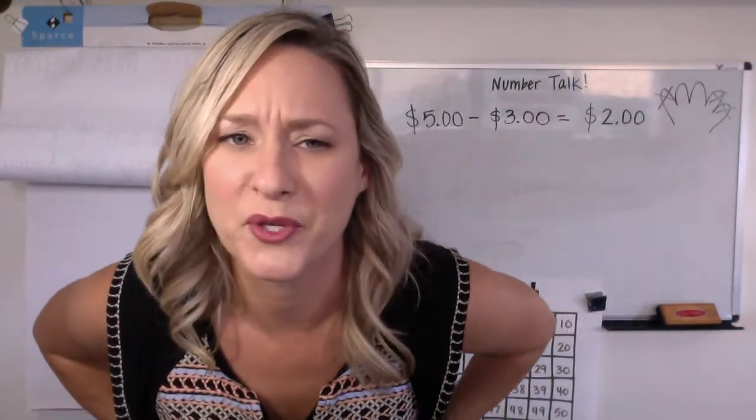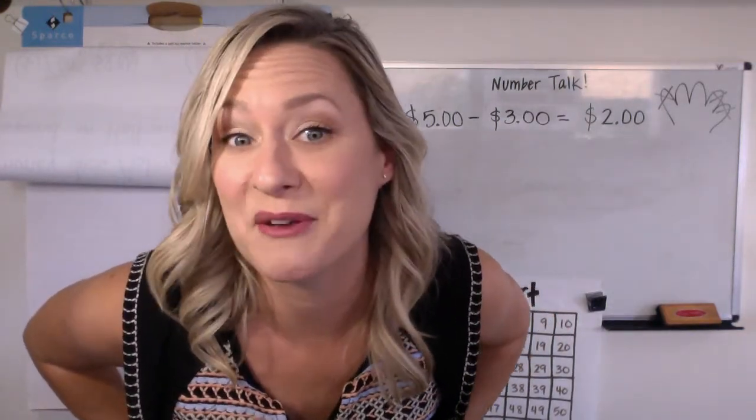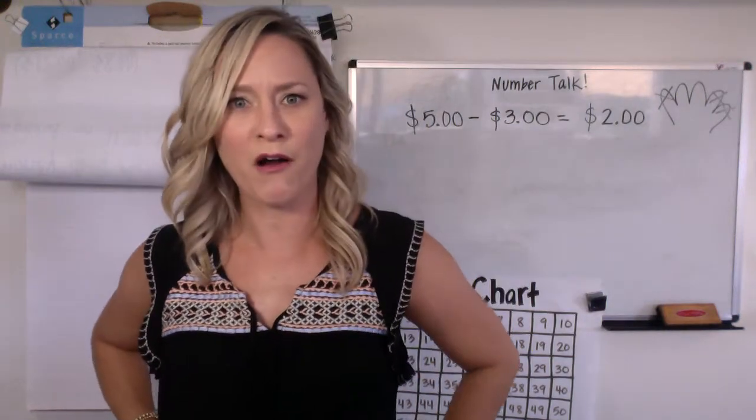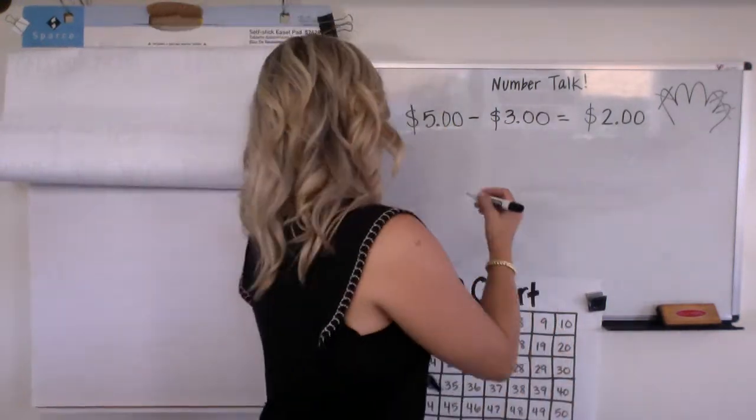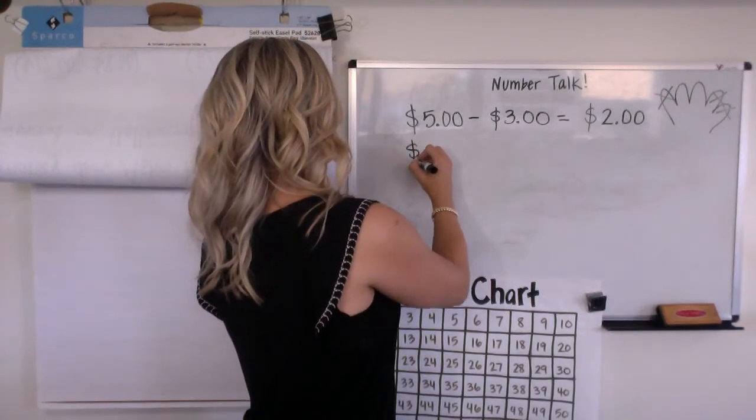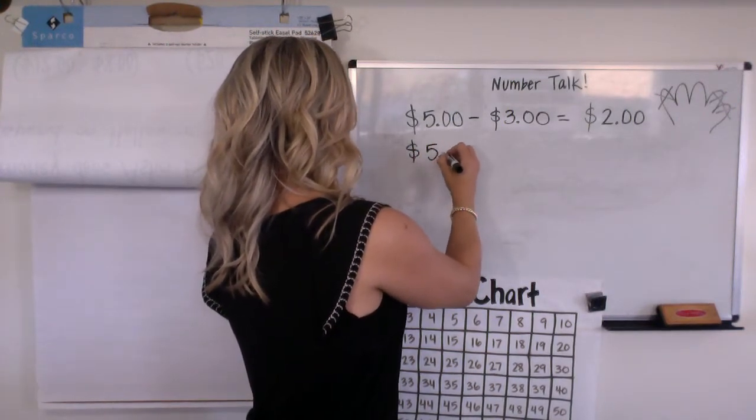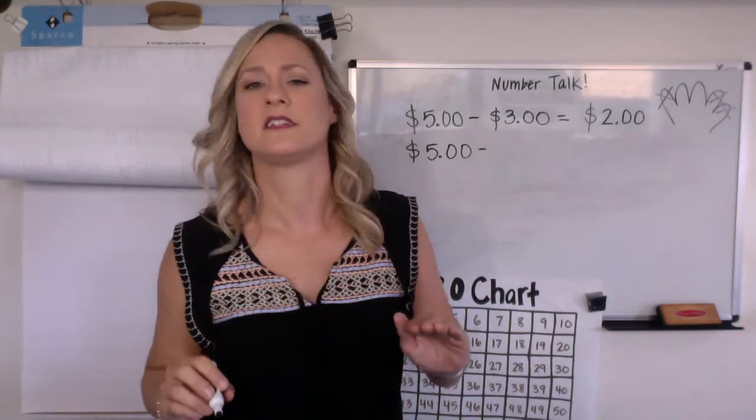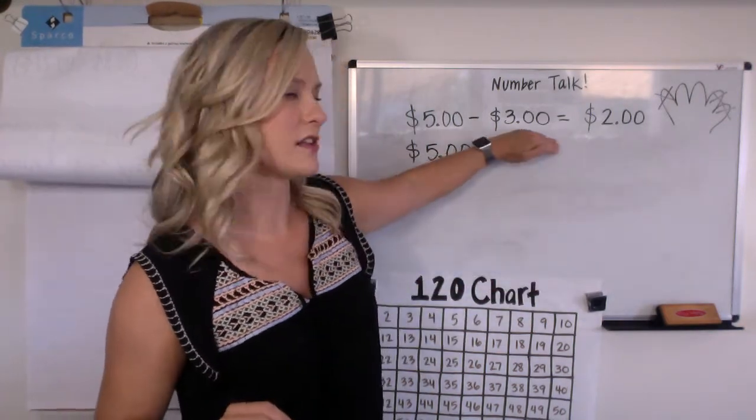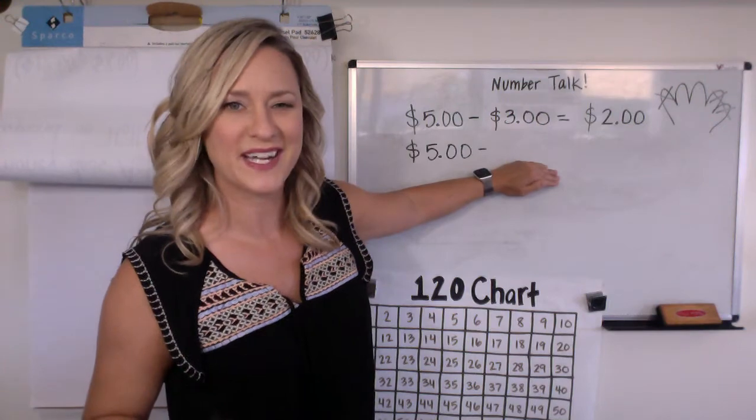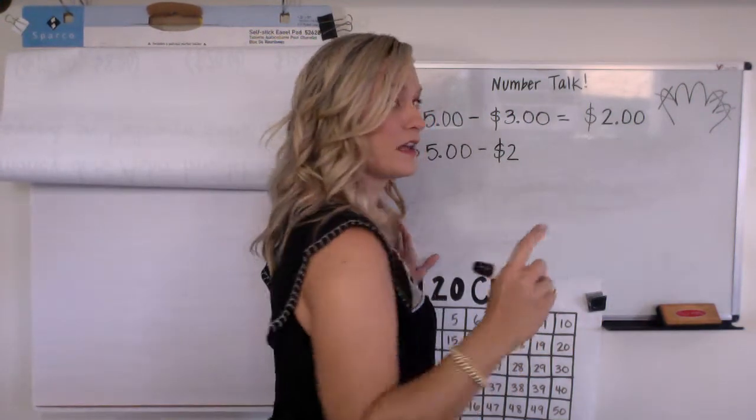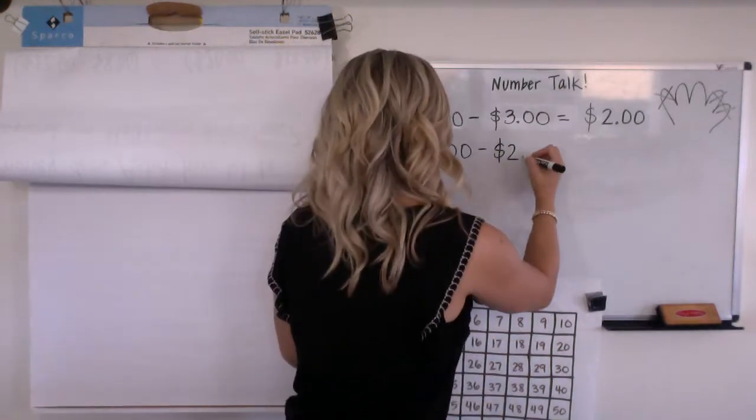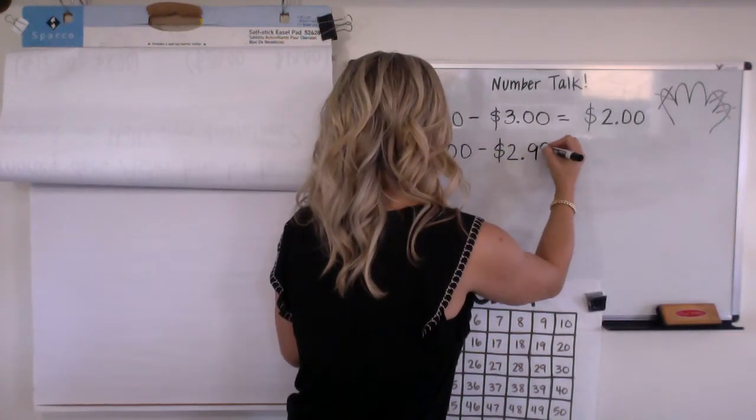You gotta tell me. Okay, so if you know that one, I'm gonna throw at you something that adults would say would be hard. This is too hard, but I think you can do it. Let's try it. Five dollars minus—okay, you already knew what minus three dollars was. What if I say minus two dollars and ninety-nine cents?